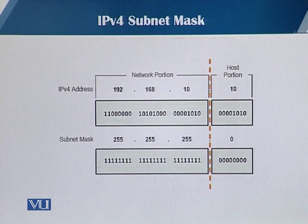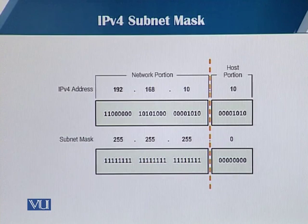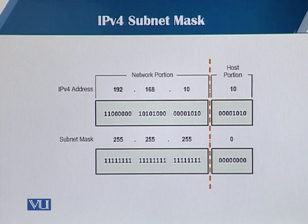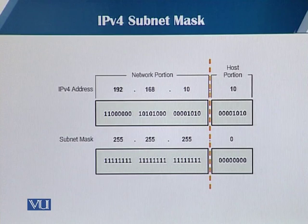If you are given an IPv4 address, how are you going to find out the network part of the IP address? An IP address has two parts: one is the network portion and the other is the host portion. The network portion tells you the network address, and all machines in the network share the same network portion. The host portion identifies a particular end device or interface address in the network. You use the subnet mask to find out the network address of an IP address.